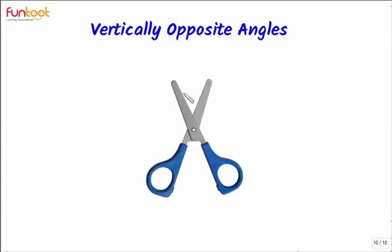For understanding vertically opposite angles, let's look at the working of a pair of scissors. In a pair of scissors, these two are the cutting arms and these two are the handles. If you want to open the cutting arms or increase this angle, we do not touch the cutting arms directly — instead we open the handles.